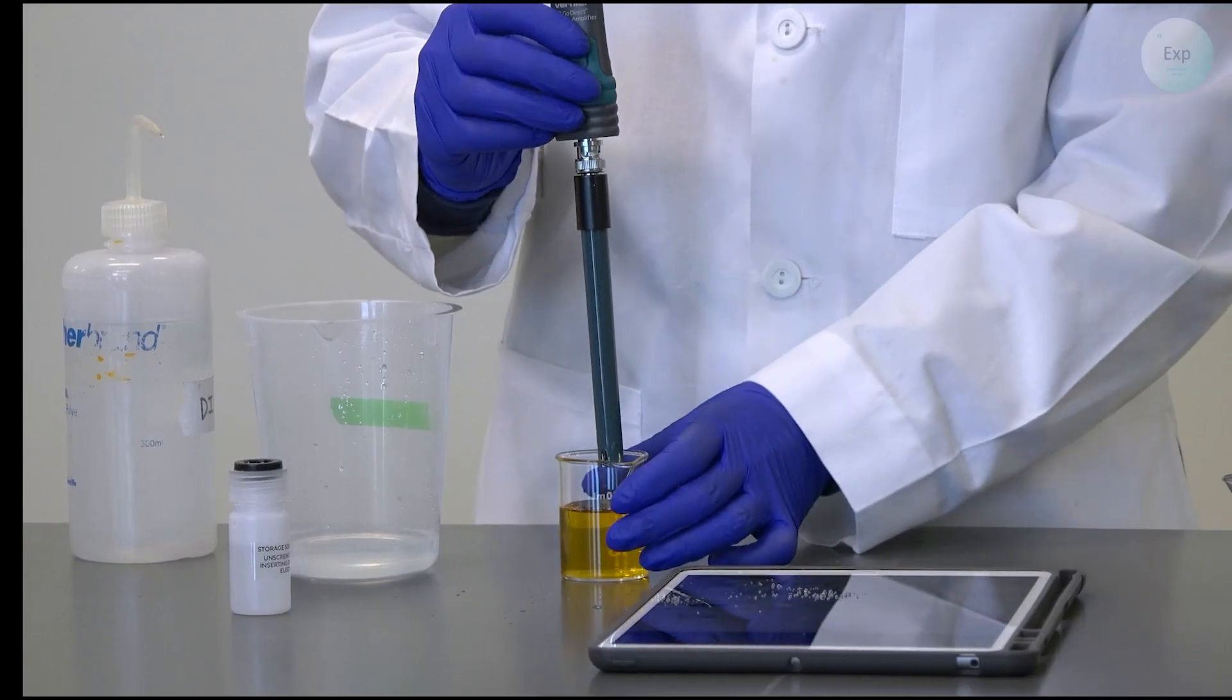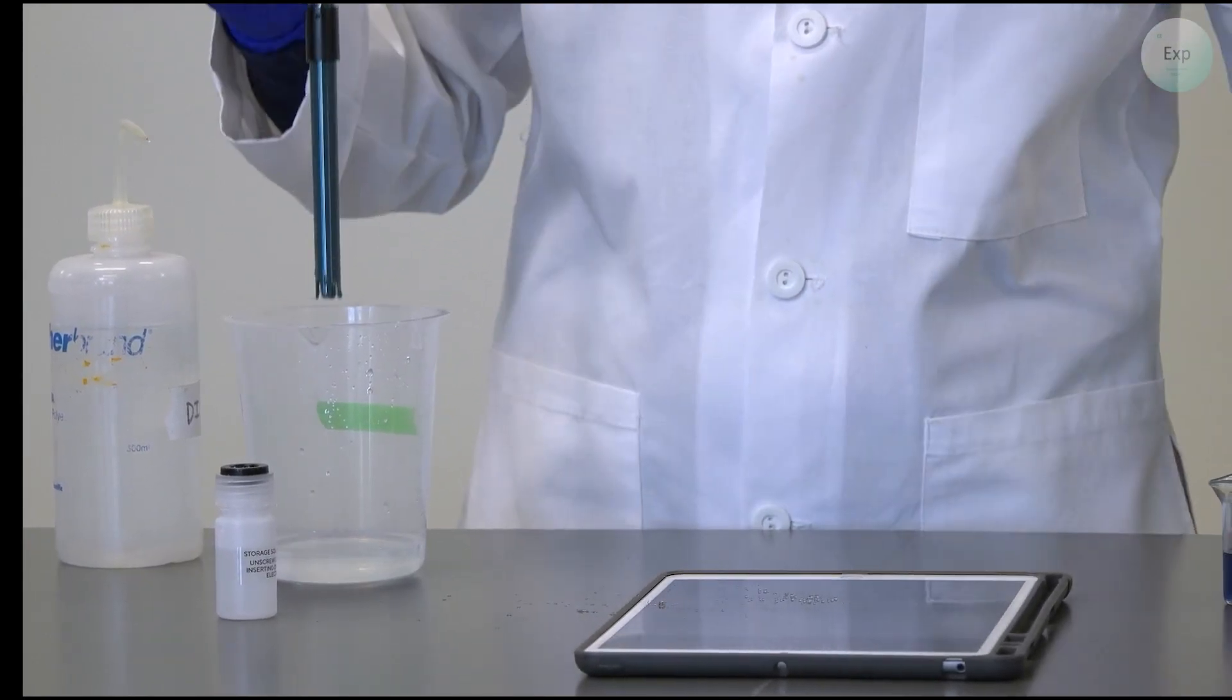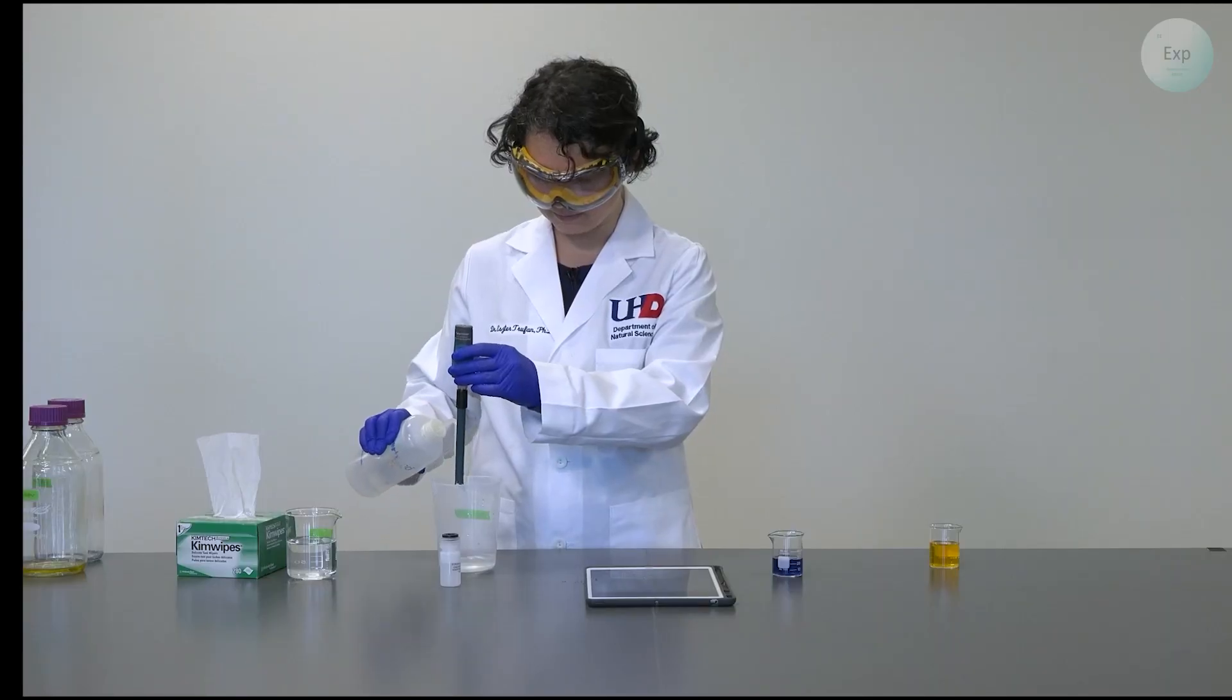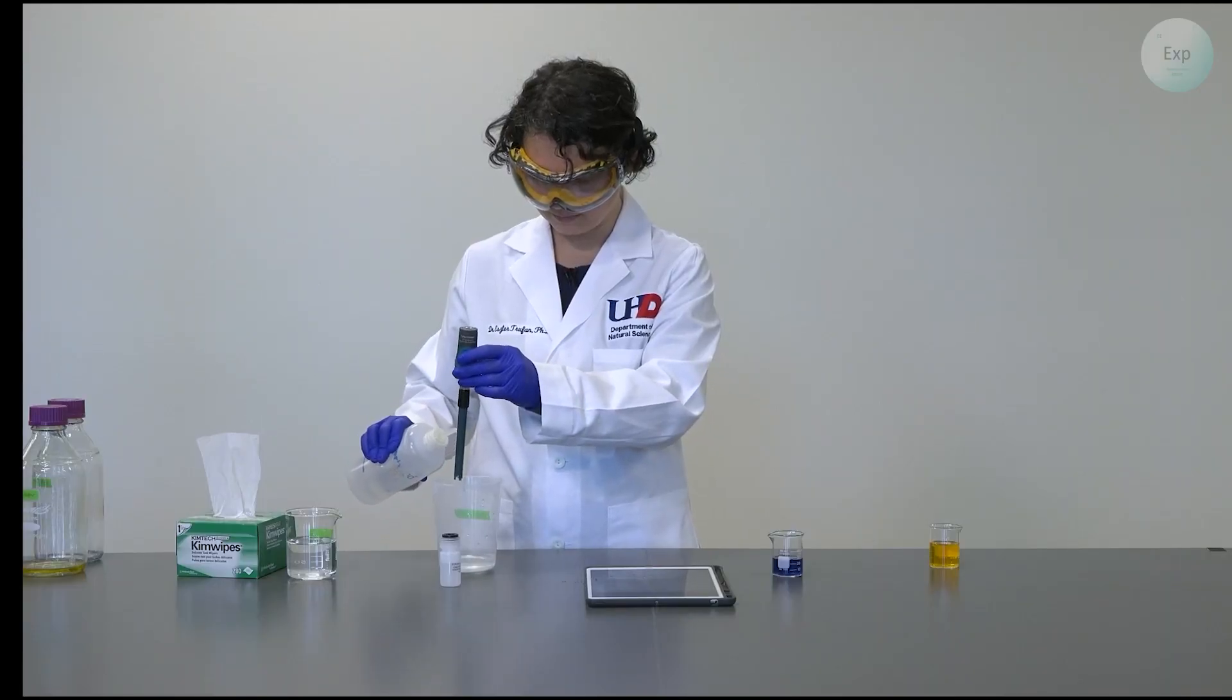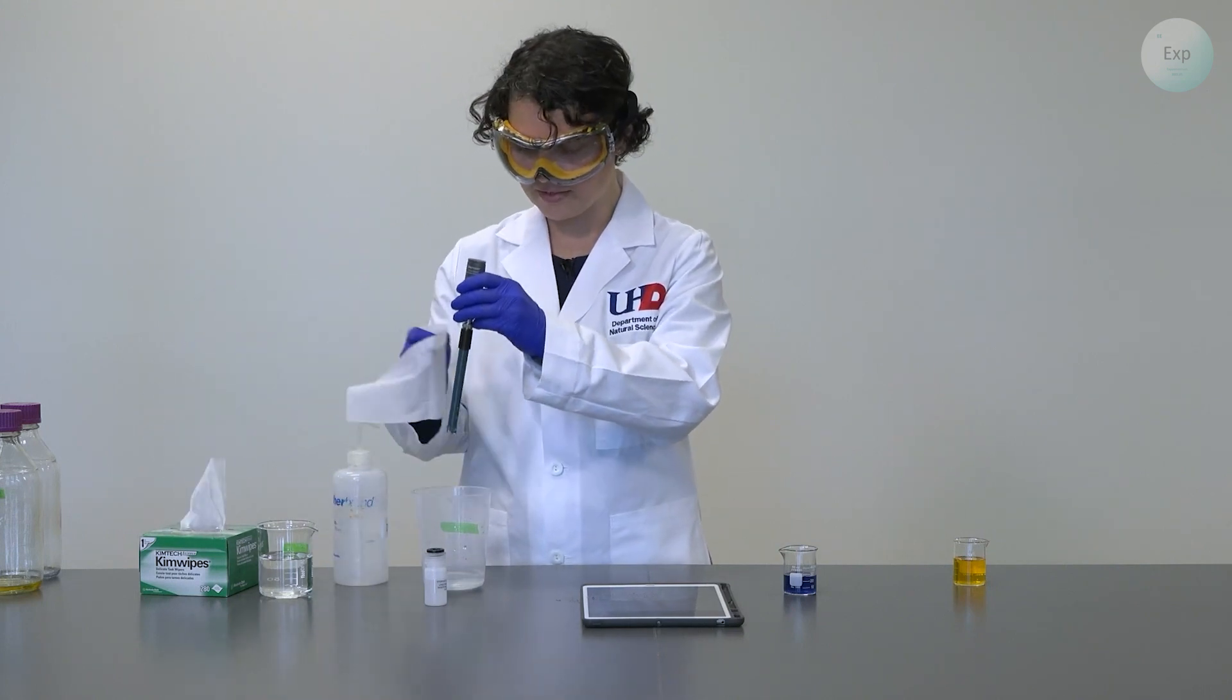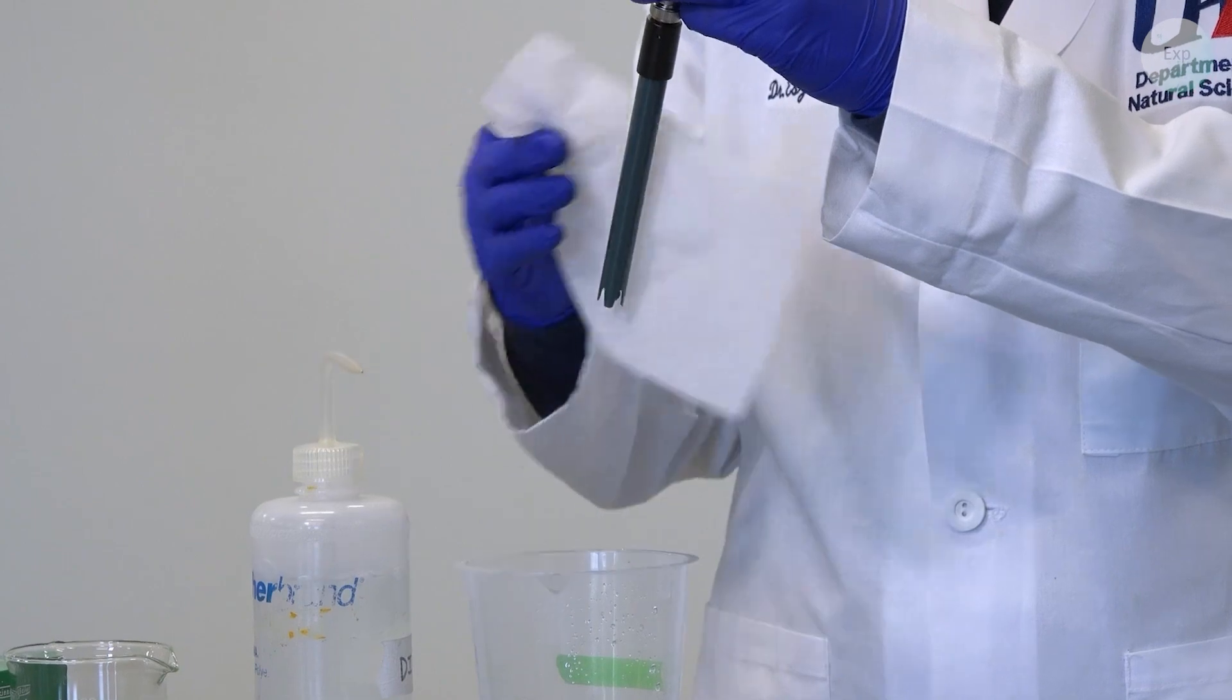When we are done with the first buffer solution, we set that solution aside and we rinse our pH probe with the deionized water. Once the rinsing is complete, we dry it with kim wipes.